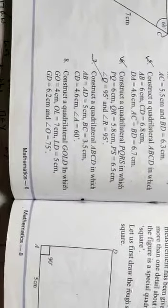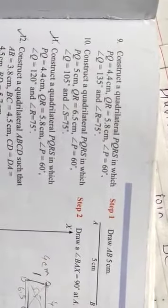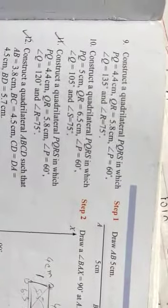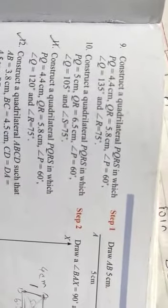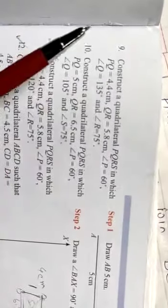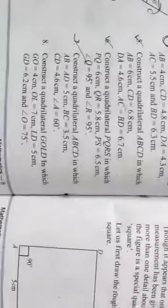Question number eight is similar to question number seven, so it is your homework. Question number nine asks to construct quadrilateral PQRS with three angles given — that will be covered in the next class.